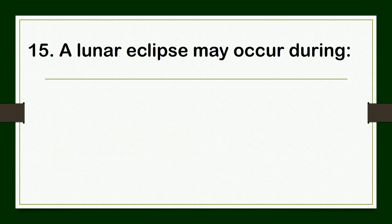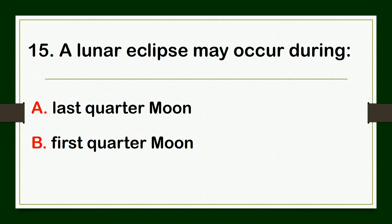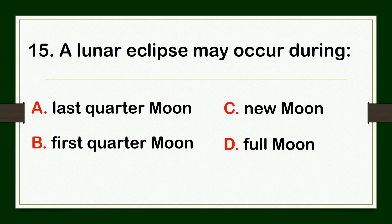A lunar eclipse may occur during — A. last quarter moon, B. first quarter moon, C. new moon, or D. full moon.